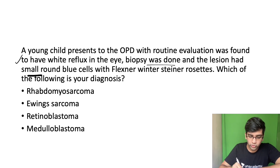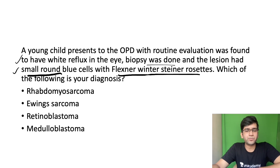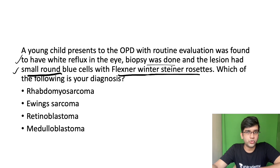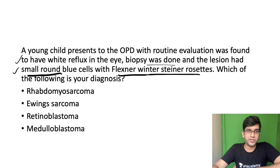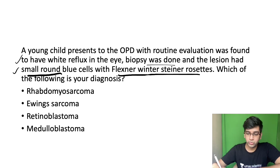The lesion showed a small round blue cell tumor with Flexner-Wintersteiner rosettes. The question asks: which is your diagnosis? If you've read about patterns of neoplasia — available on my YouTube channel or the AN Academy app — you'll know that all these small round blue cell tumors commonly end with 'blastoma.'